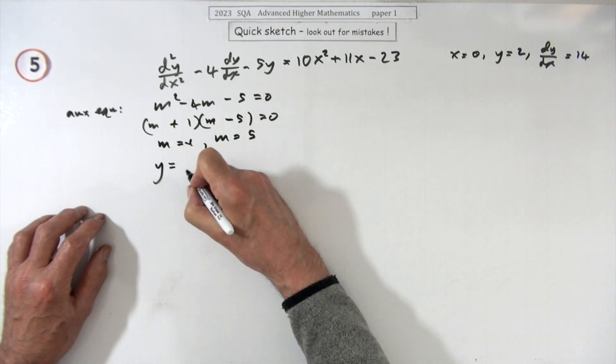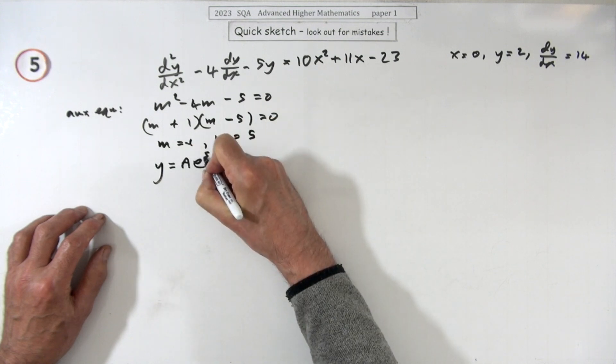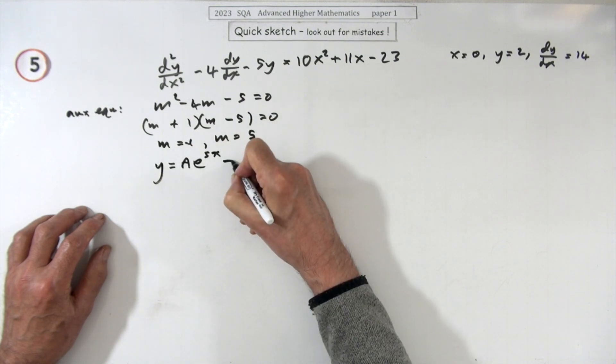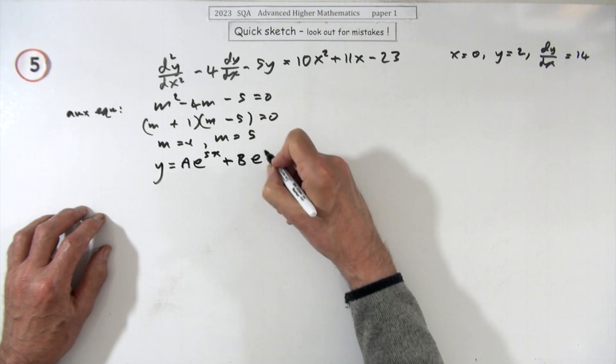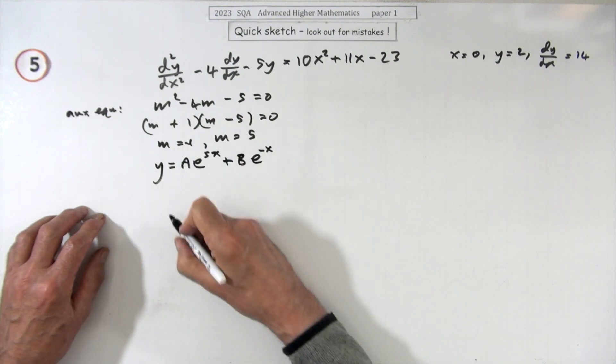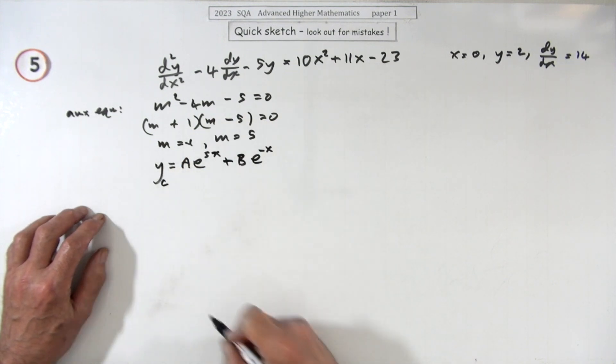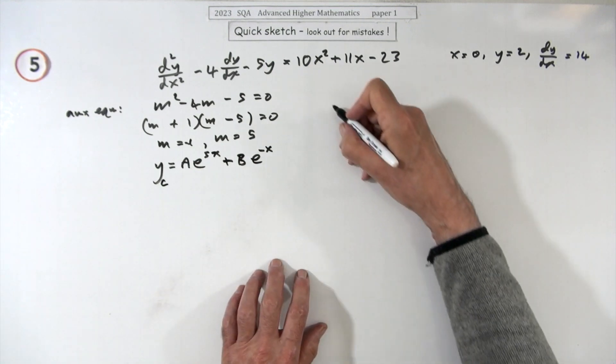So that means you've got y equals any number, I'll put this one first, e to the power 5x plus any number of e to the negative x. So that's your complementary function.